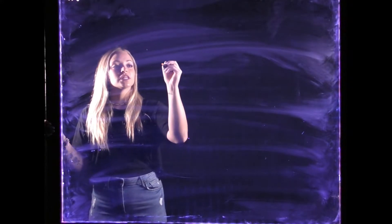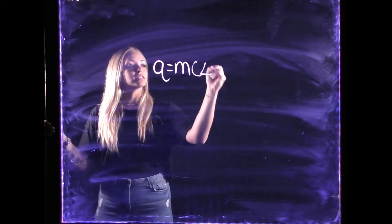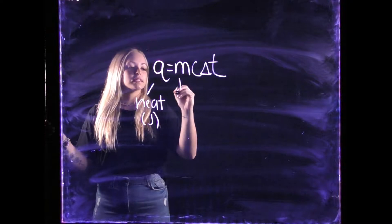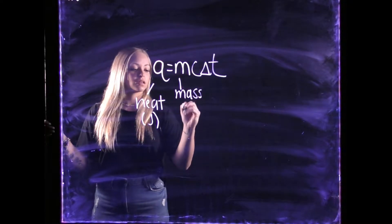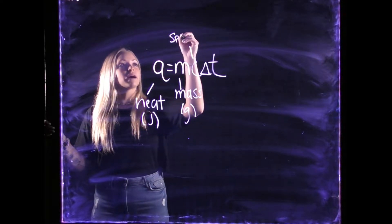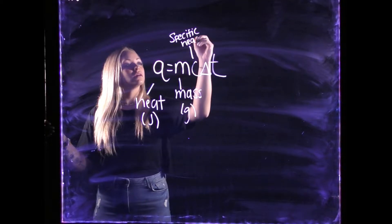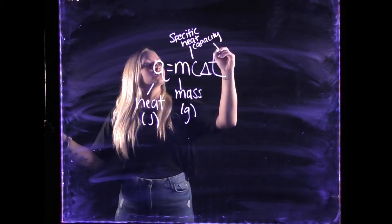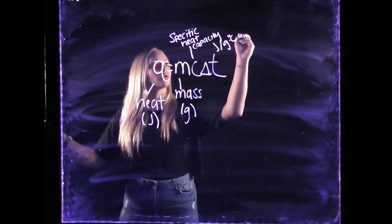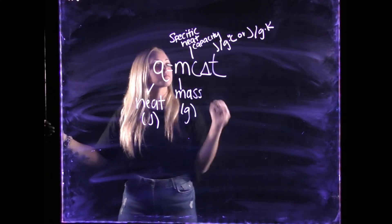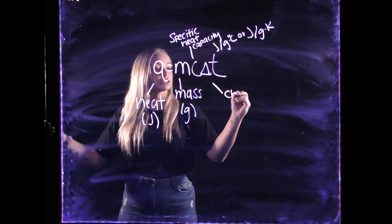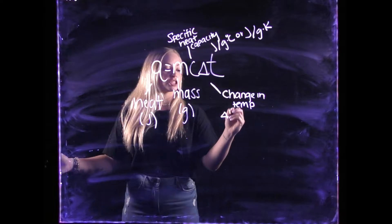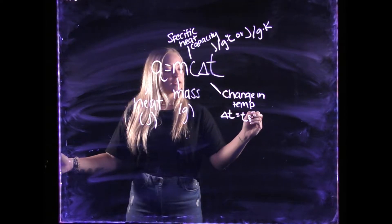Now, let's bring down the equation Q equals mc delta T. Q is the heat measured in joules. M is mass measured in grams. C is the specific heat capacity, measured in joules per gram times degrees Celsius, or joules per gram times K. Delta T is the change in temperature, found by subtracting T initial from T final.